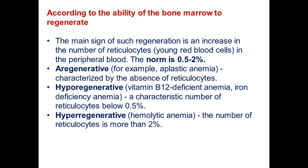According to the ability of bone marrow to regenerate, we recognize regenerative, hypo-regenerative, hyper-regenerative, and sometimes normo-regenerative anemias. The main sign of regeneration is an increase in the number of reticulocytes — these are the young red blood cells before erythrocytes. The normal range of reticulocytes is 0.5 to 2 percent. In aregenerative anemia, such as aplastic anemia, there is an absence of reticulocytes. Hypo-regenerative is characterized by reticulocytes below 0.5 percent. Hyper-regenerative, most characteristic of hemolytic anemias, shows reticulocytes more than 2 percent.